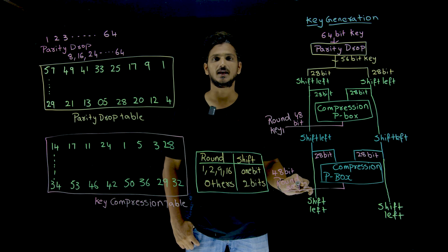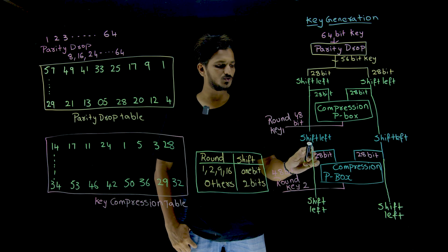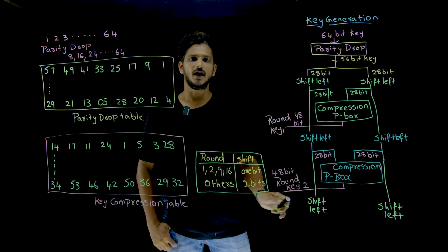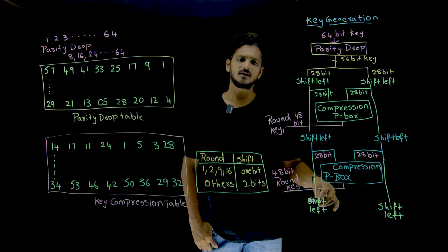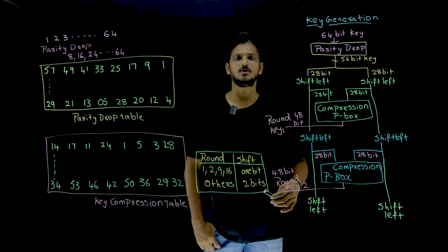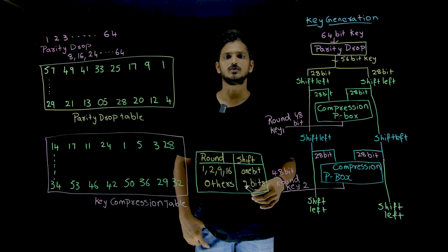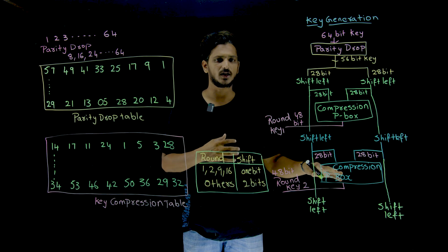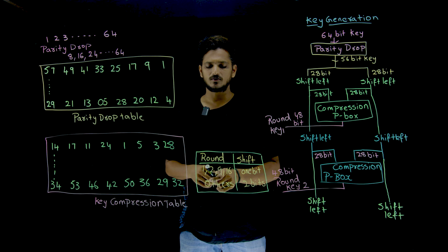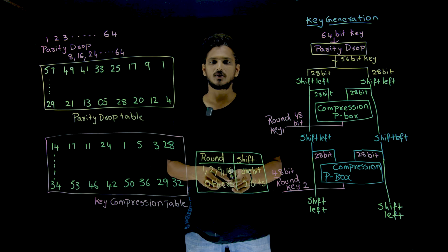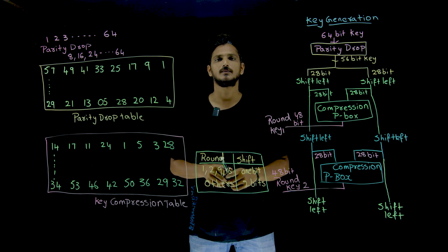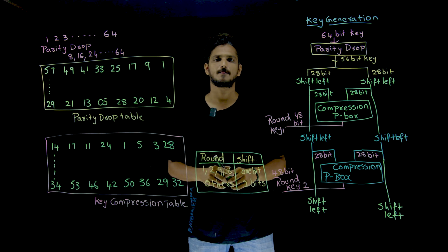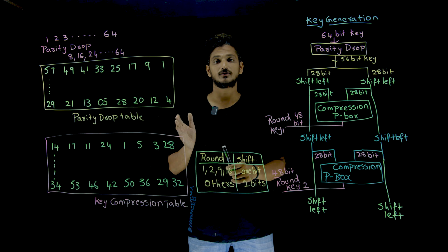This is the second key. Again move to the next round — these 28 bits move after doing the shift, and these bits are moved to the next round. Again shift left, then the compression p-box produces a 48-bit key. Like this, a total of 16 round keys are generated. In these 16 rounds, the 1st, 2nd, 9th, and 16th rounds do a 1-bit left shift. The remaining rounds do a 2-bit left shift.